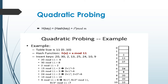9 should be placed at key value 9, but already 20 is placed. So i is incremented: 9 + 1² = 10, but already 10 is placed. For i equal to 2: 9 + 2² = 13 mod 11 — already placed. So i equal to 3: 9 + 3² mod 11 equal to 7. As 7 is empty, the value is placed in the hash table at key value 7. This is about quadratic probing.